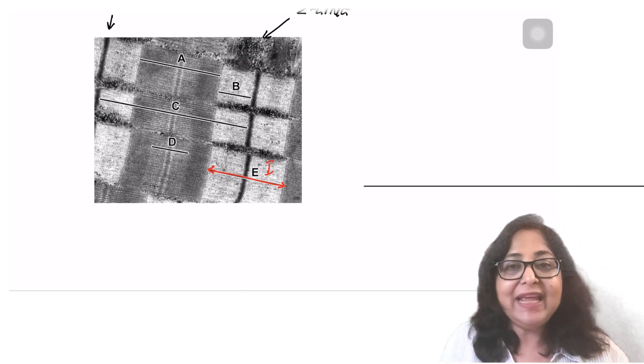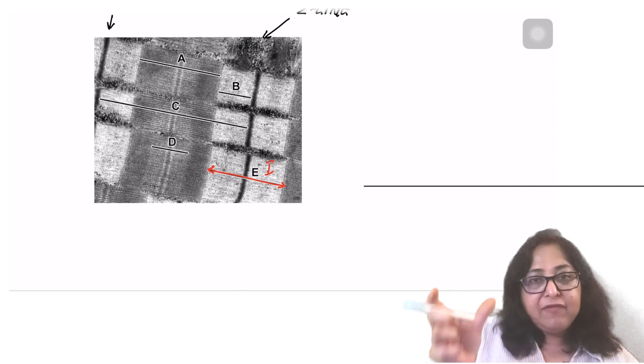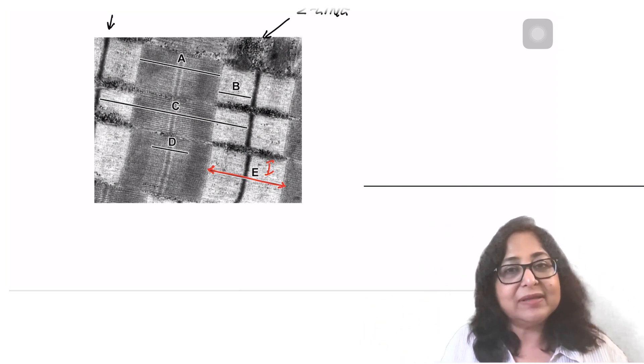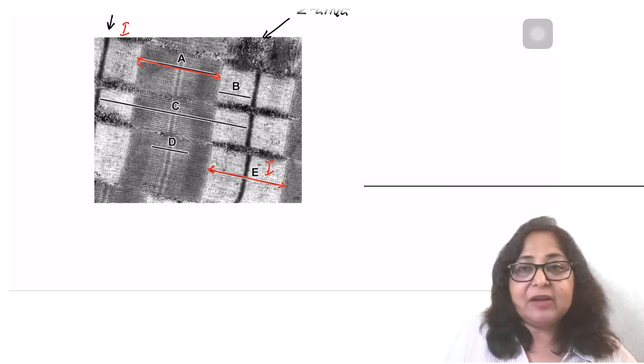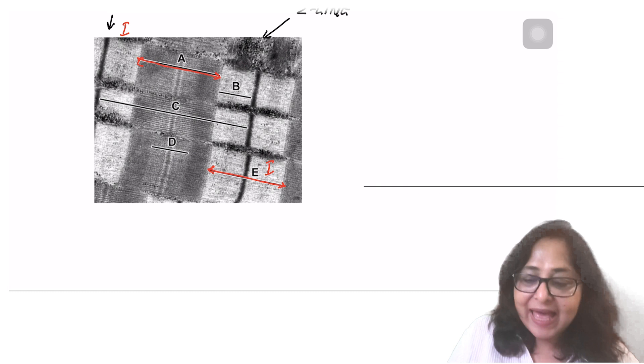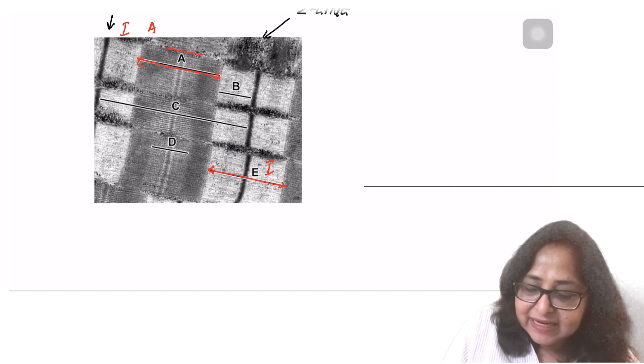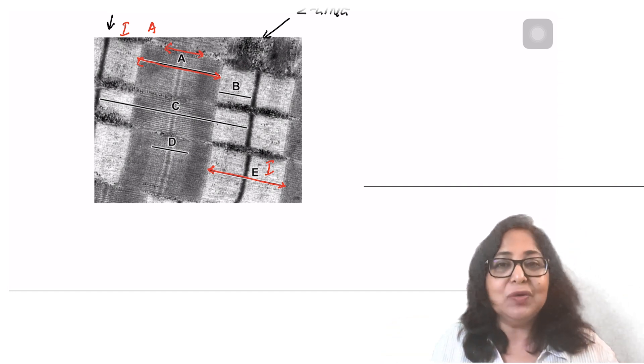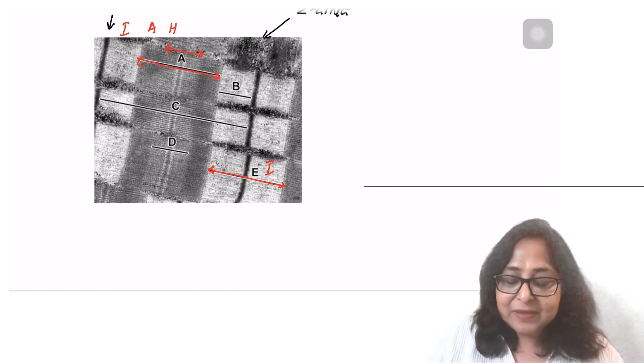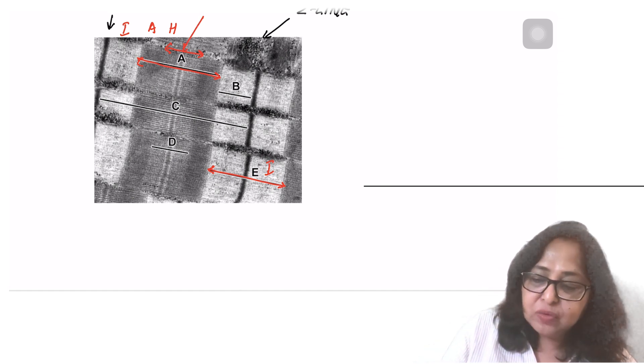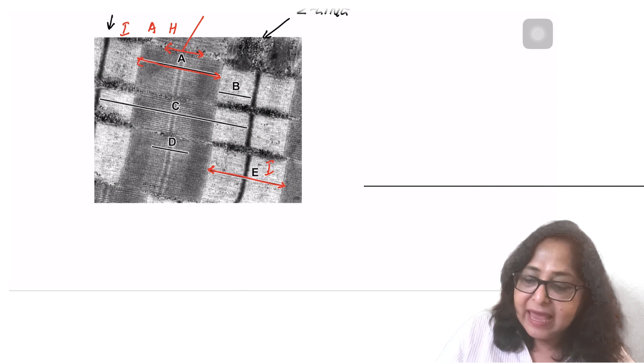Then, here you have the light band or the I band. I band consists of only actin and remember, half of I band is in one sarcomere, half is in a neighboring sarcomere. Then you have the A band, which is the dark band. This dark band is myosin plus overlapped actin. And within the A band, you have a slightly lighter area, which is only myosin. And that is the H band or the H zone.